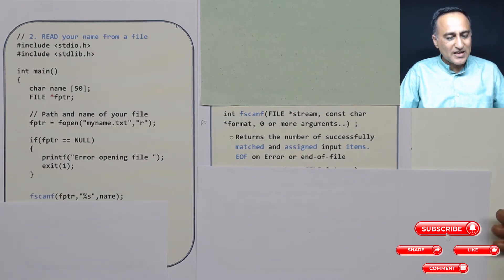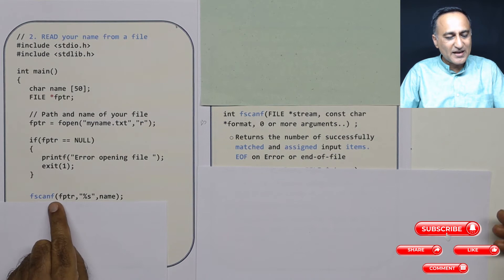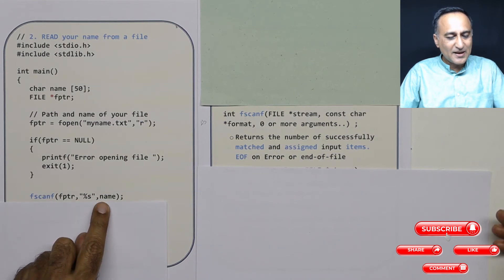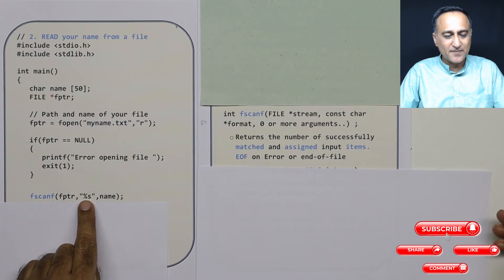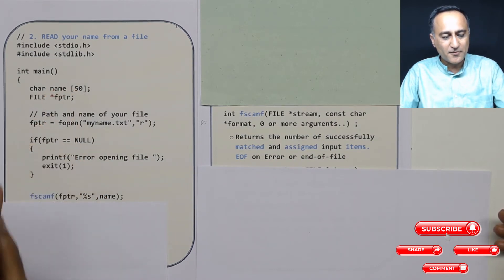Then what I am going to do here is I am simply going to say fscanf %s name. The data which is stored on your hard disk is of the type %s and that means it's a string. So Arjun was the name we entered. Arjun is going to be stored in name.